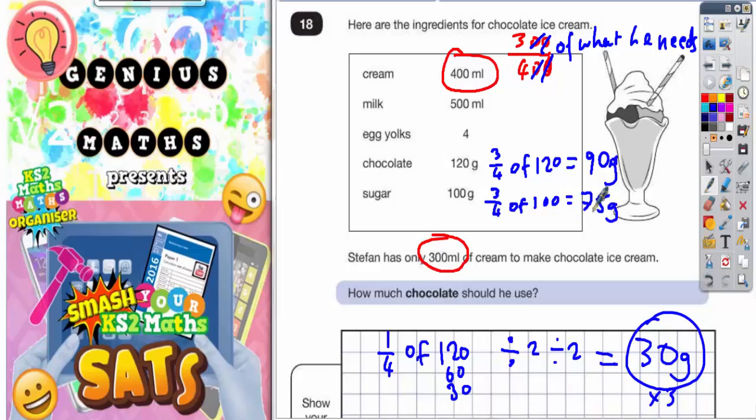Three quarters of 4 egg yolks would be 3, so you'd put three egg yolks in. And three quarters of 500, well one quarter of 500, if you half it and half it again, half of 500 is 250, half of it again is 125.